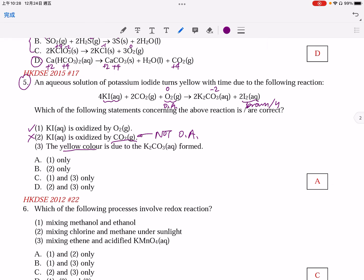The yellow color, of course, comes from iodine. Normally, it is brown. But when the concentration is not that high, it is yellow. So, this is incorrect. Instead, it comes from iodine. So, this is incorrect. So, the answer is A.